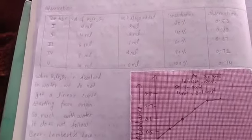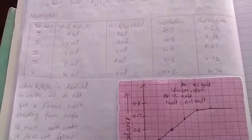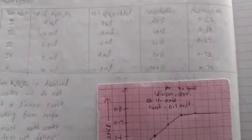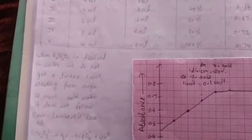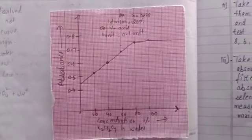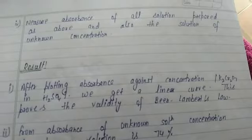When potassium dichromate is dissolved in water, we don't get a linear curve starting from origin. With water, it does not follow Beer-Lambert's law as you see from our curve.